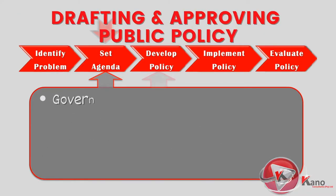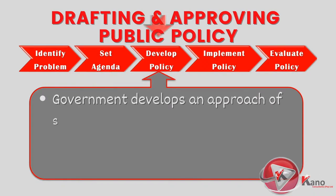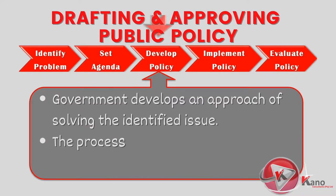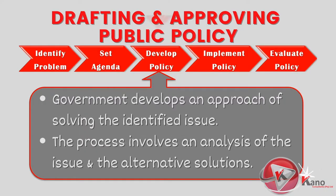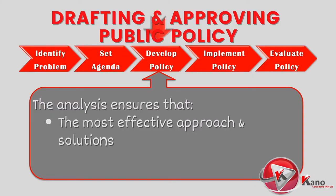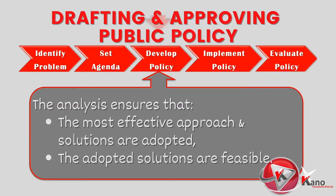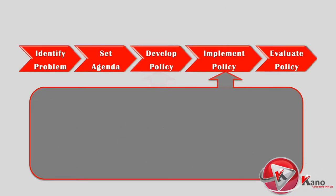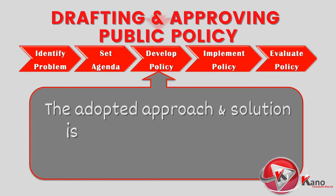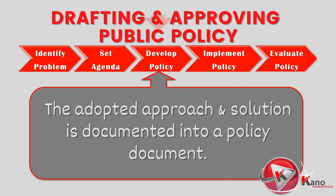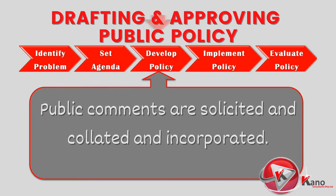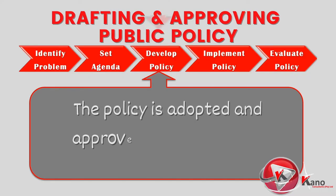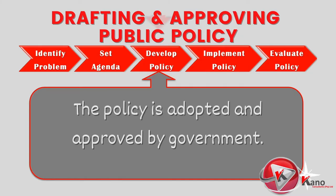The next step in the public policy process is actually formulating the policy. This is when the government starts the process of coming up with an approach of how they intend to solve the identified issue. This process involves an in-depth analysis of the issue together with the alternative solutions to address the issues, ensuring that the most effective and feasible approach is adopted. Government's approach and solution is then documented into a policy document — this can either be legislation, a regulation, a departmental policy, or internal rules. Public comments are then solicited and incorporated into a final policy document, which is then adopted and approved by the relevant government officials or the appropriate level of government structure.